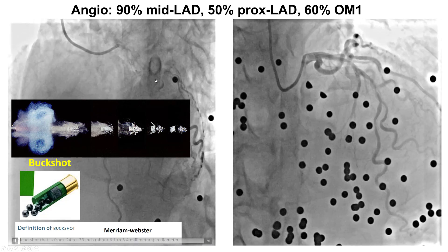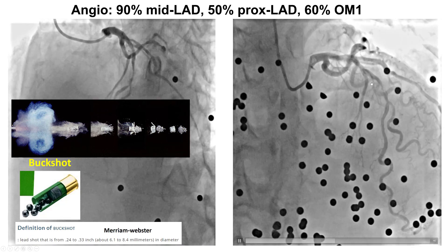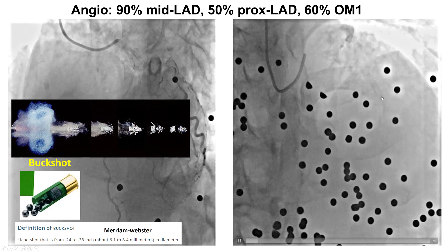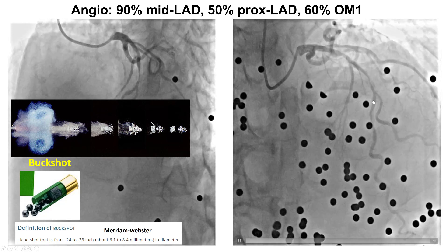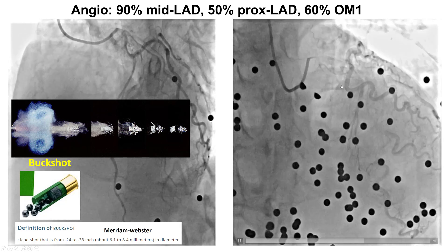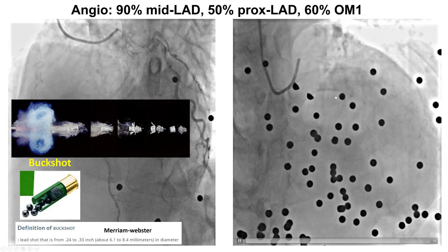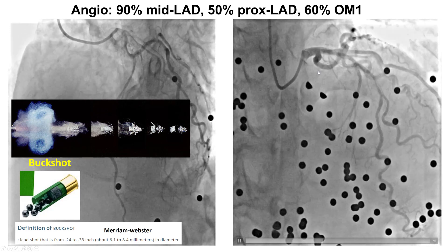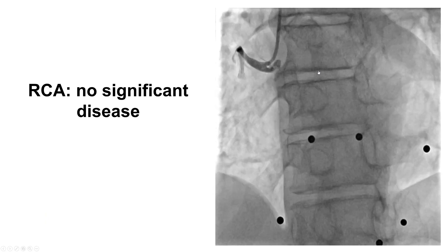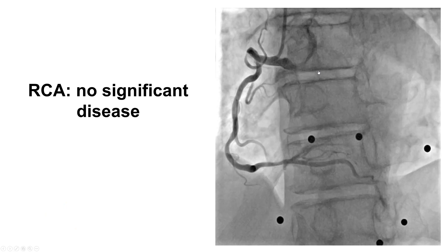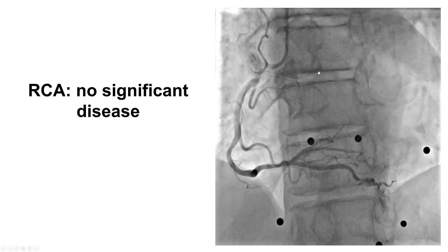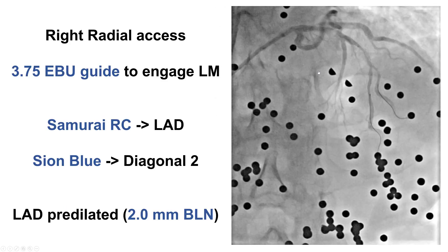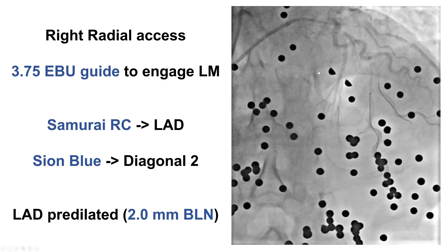Looking at the coronaries, he had a significant mid-LAD lesion — this is after intracoronary nitroglycerin administration — and moderate lesions in the proximal LAD as well as the obtuse marginal branch. There was no significant lesion in the right coronary artery, and therefore the plan was to treat the mid-LAD lesion.